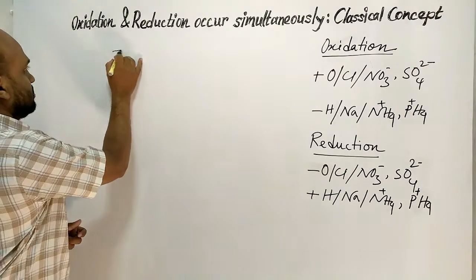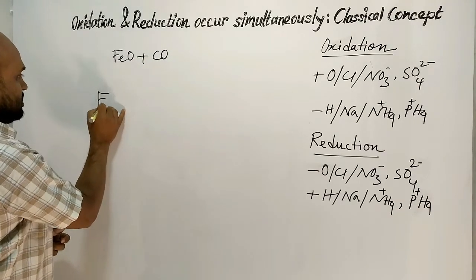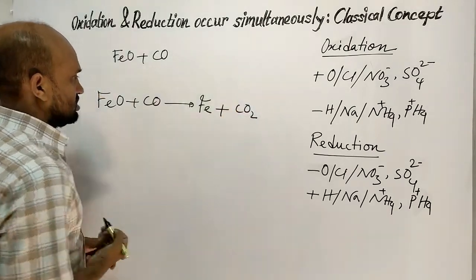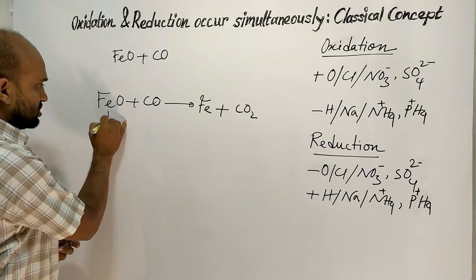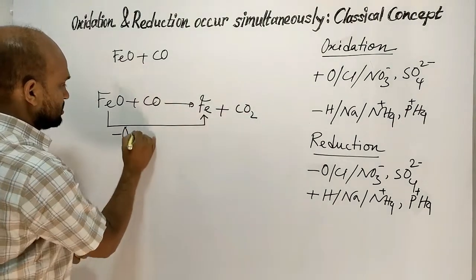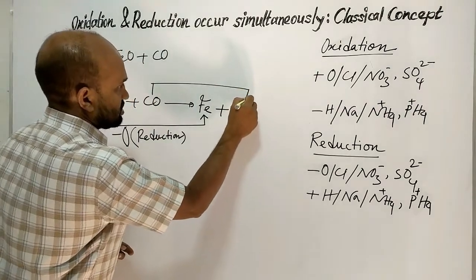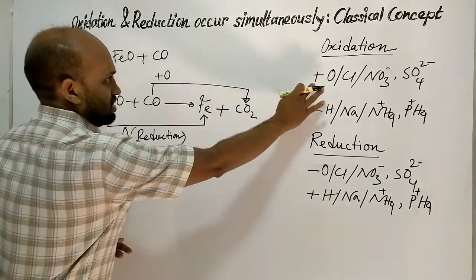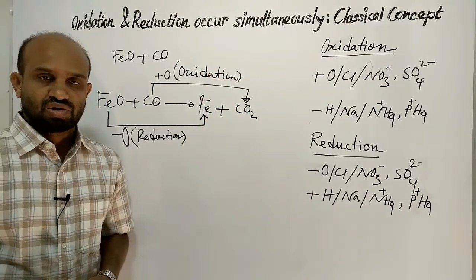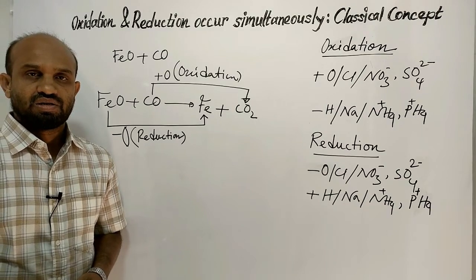Now the reaction between ferrous oxide and carbon monoxide. When ferrous oxide is added to carbon monoxide, iron and carbon dioxide are formed. Iron(II) oxide turns into iron after the removal of oxygen — removal of oxygen means reduction. And carbon monoxide turns into carbon dioxide, meaning addition of oxygen occurs — addition of oxygen means oxidation. So this reaction is one in which oxidation and reduction happen simultaneously.